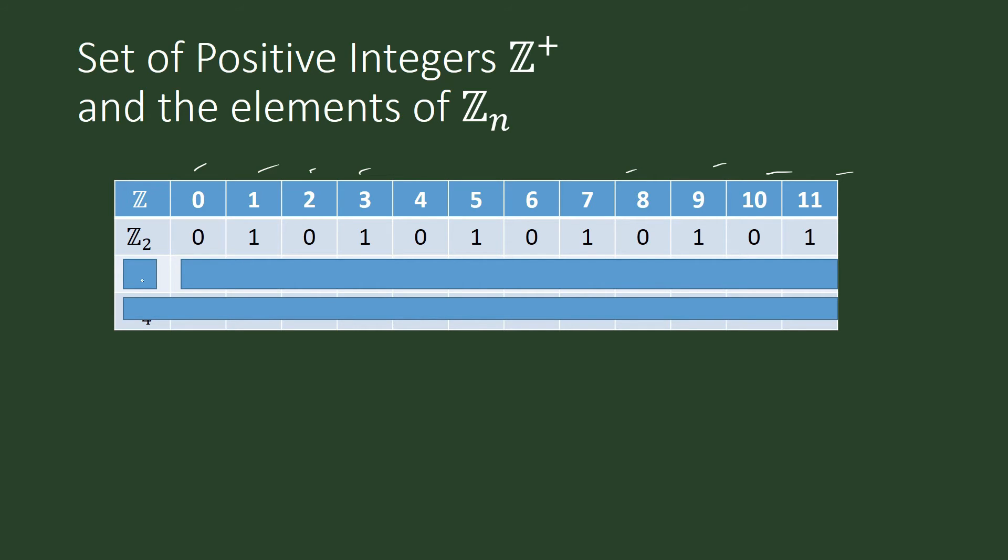In the set of integers, it's 0, 1, 2, 3, and so on. But counting for modulo 2 arithmetic is going to be 0, 1, 0, 1, 0, 1, and so forth. It's the same with congruence modulo 3 or modulo 3 arithmetic.